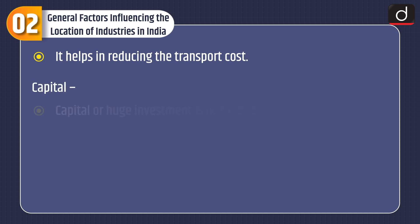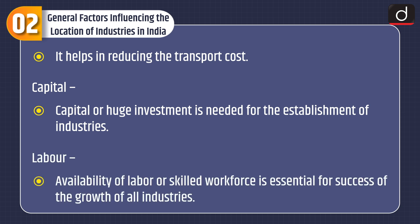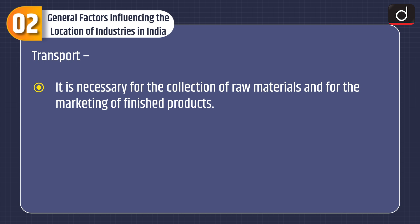Capital: Capital or huge investment is needed for the establishment of industries. Labor: Availability of labor or skilled workforce is essential for the success and growth of all industries. Transport: It is necessary for the collection of raw materials and for the marketing of finished products.